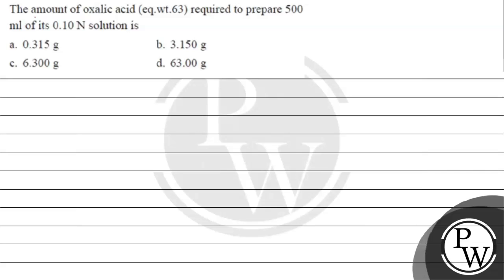Hello Bacho, let's read this question. The question says the amount of oxalic acid with equivalent weight 63 required to prepare 500 ml of its 0.10 normal solution is: option A 0.315 gram, option B 3.150 gram, option C 6.300 gram, option D 63.00 gram.